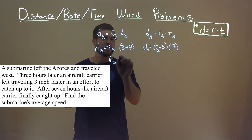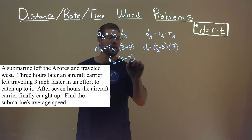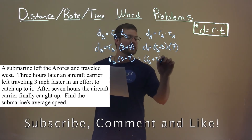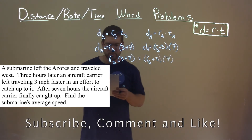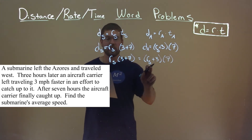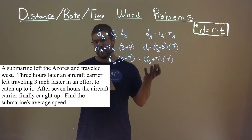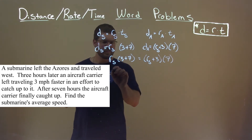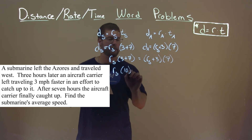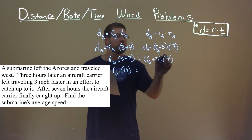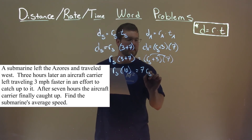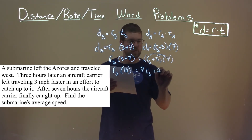R_s times (3 + 7) equals (R_s + 3) times 7. This becomes pretty beneficial — we only have one variable to solve for. So R_s times 10 equals 7·R_s + 21. Distribute the seven: seven times R_s plus three times seven is twenty-one.